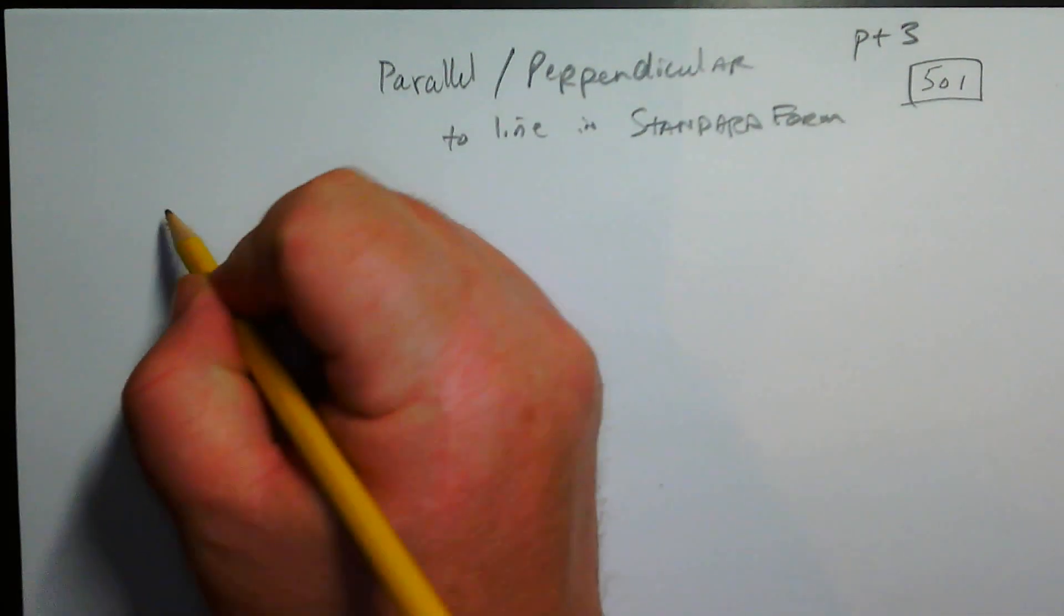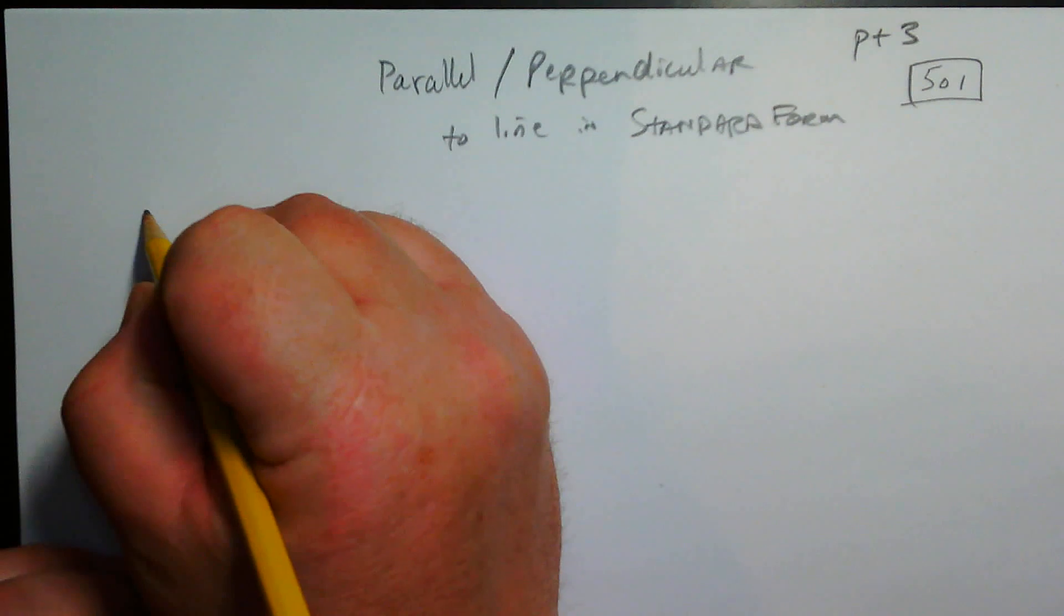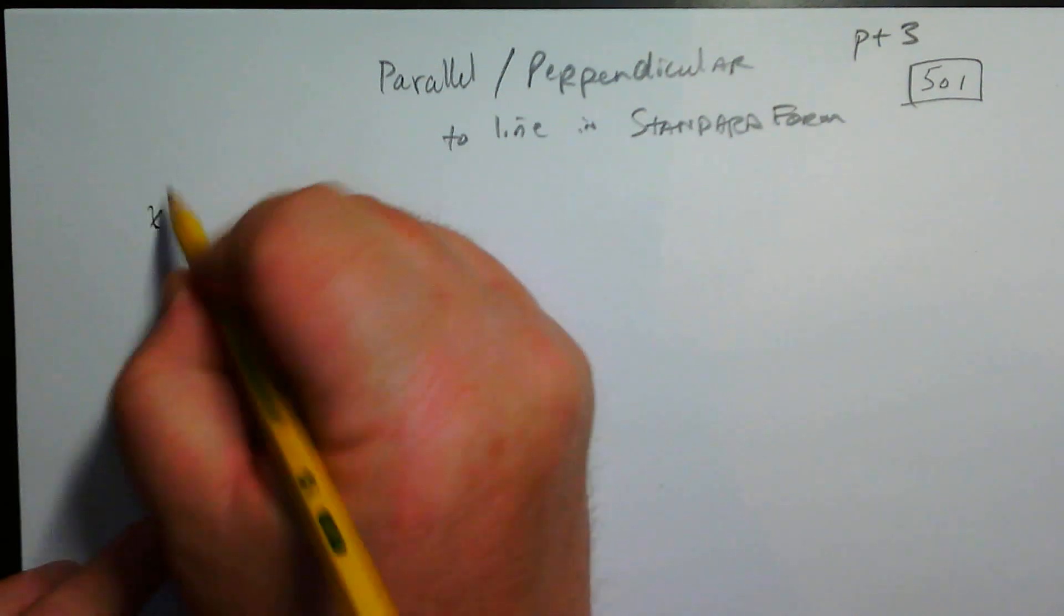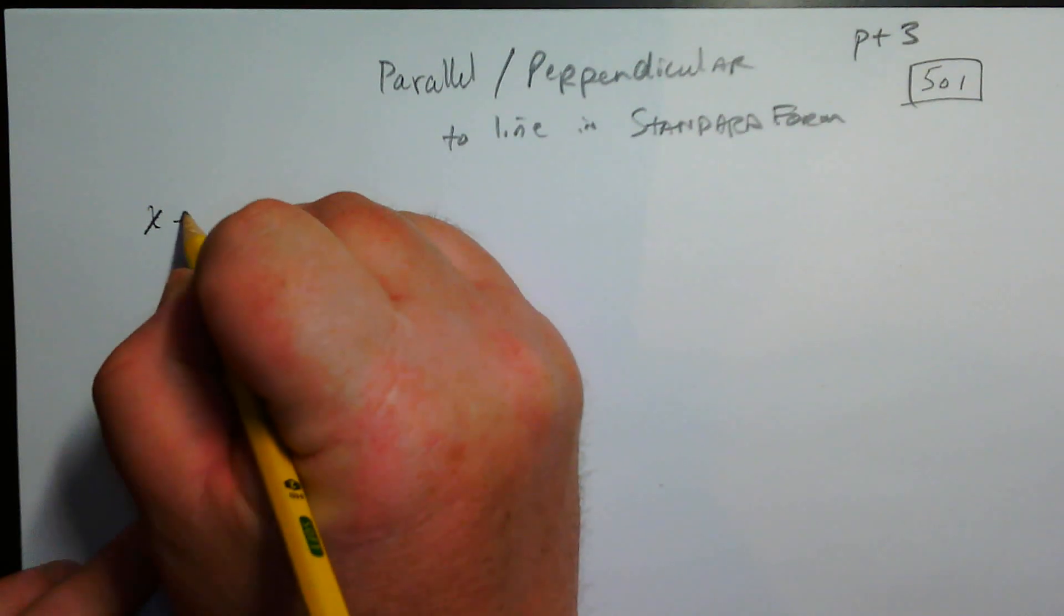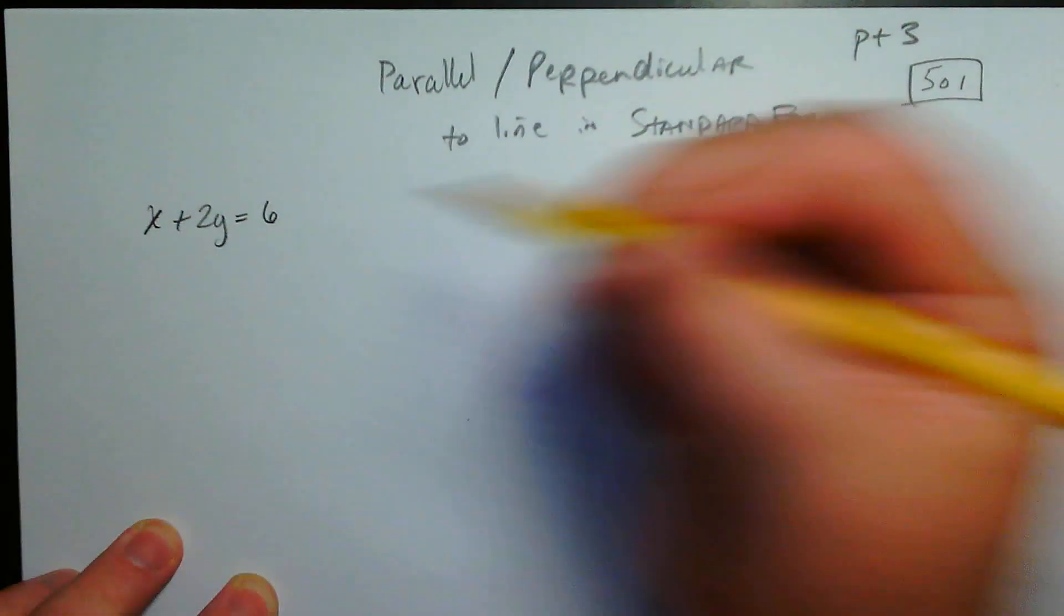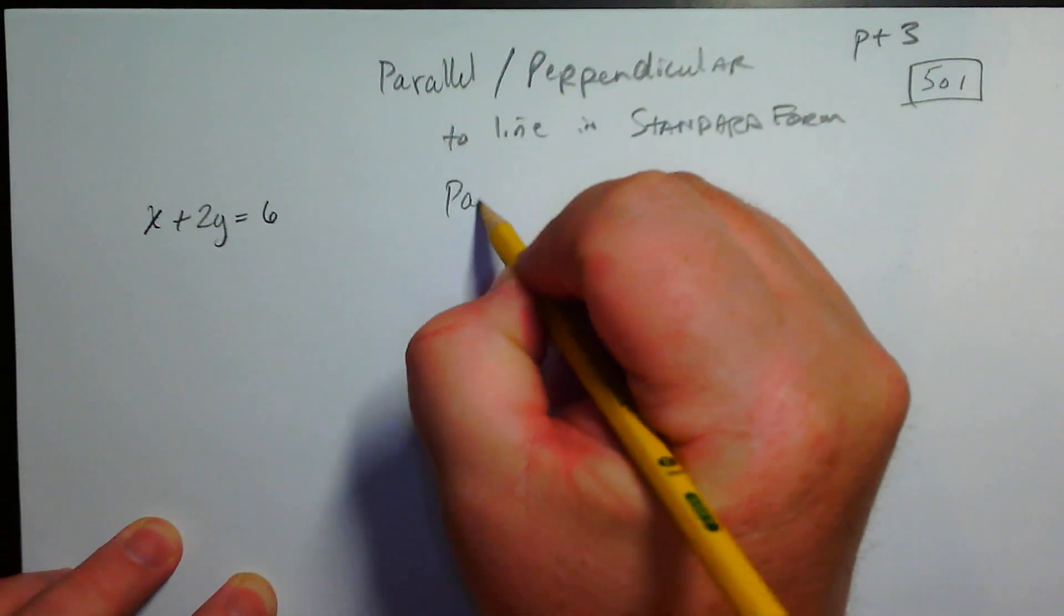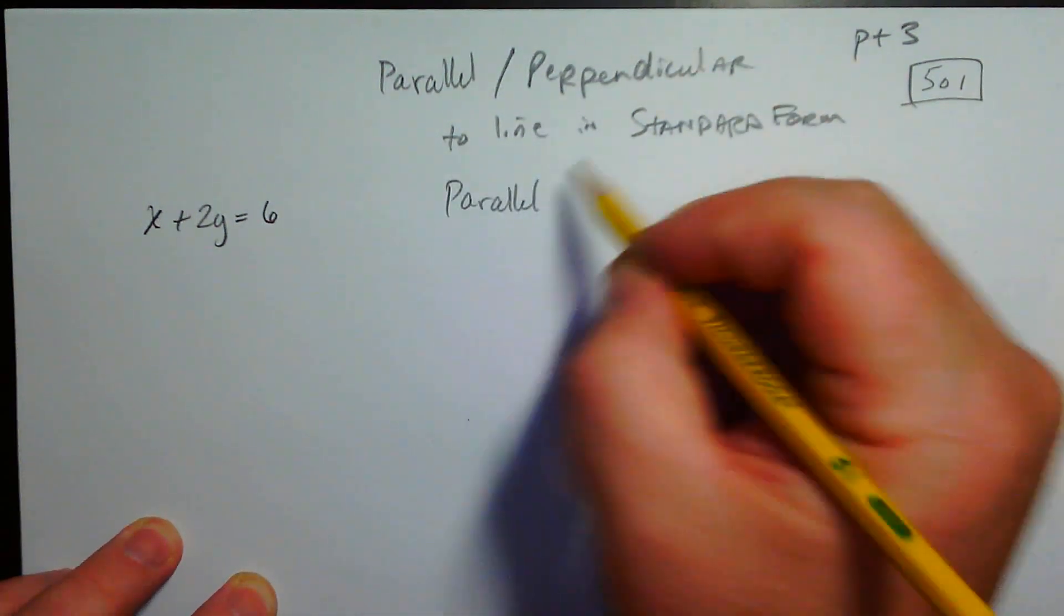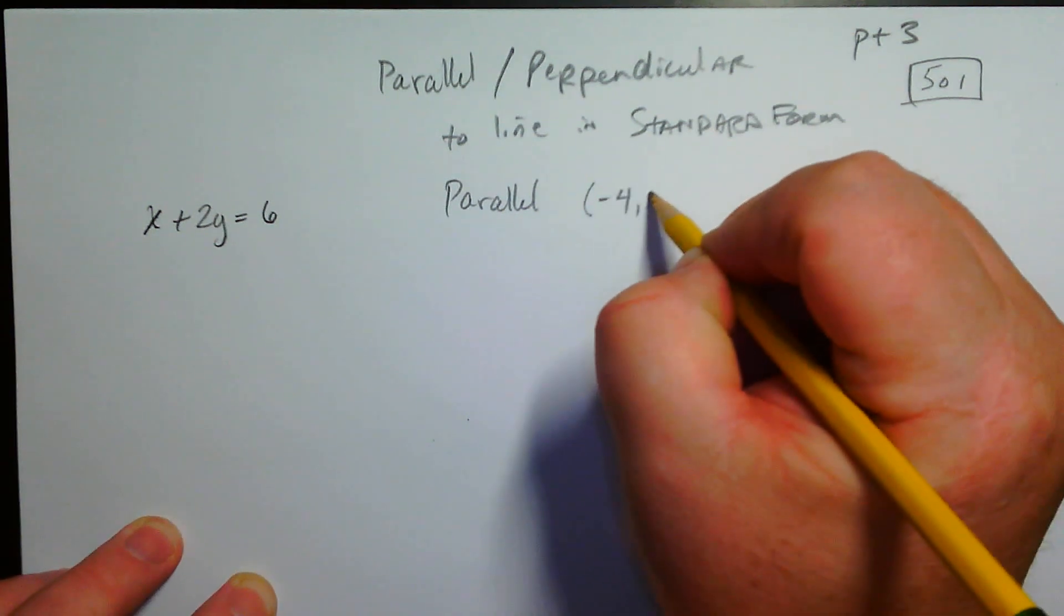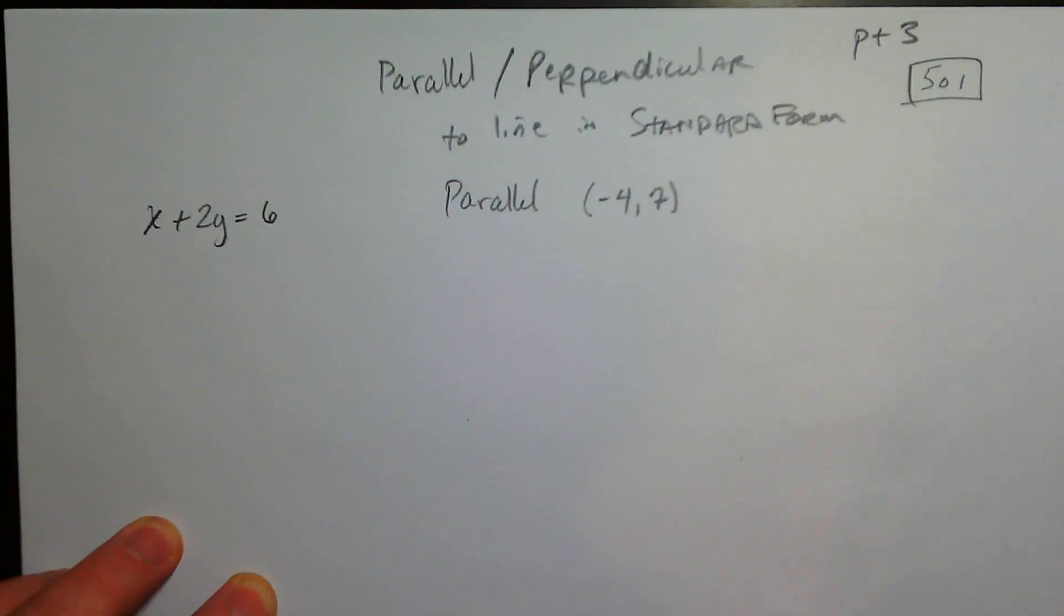We're going to have an equation in standard form. Like, say for example, let's say x plus 2y is equal to 6. And we need a line that's parallel to that. Let's say the line that's parallel to that passes through negative 4, 7.